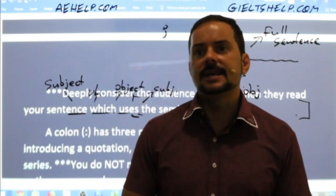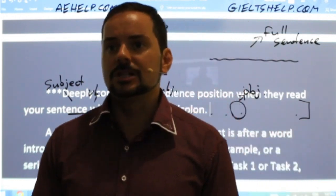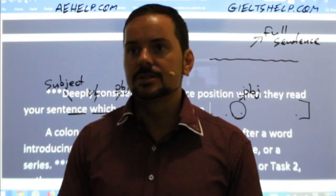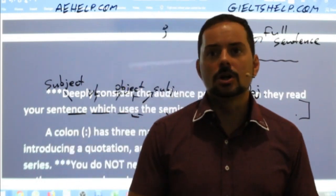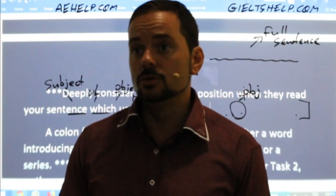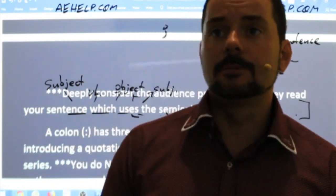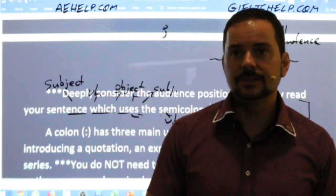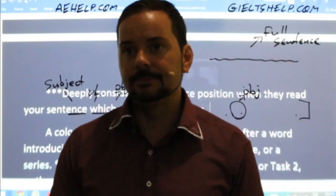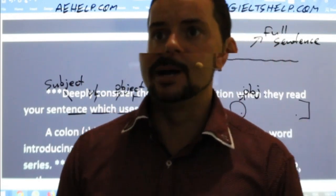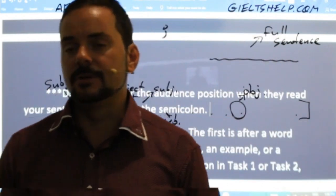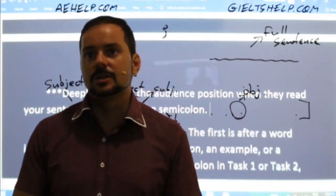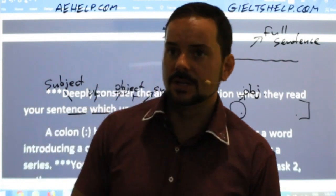Kisi says: 'I took online English classes; it could improve my language skills.' The semicolon is used well, but there's a small correction: 'classes' is plural, so instead of 'it' you should use 'they' — 'they could improve my language skills.' Be careful with your pronoun agreement.